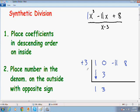So what we want to do is we want to multiply this positive 3 with this 3. And we want to place it right below the negative 11. So positive 3 times positive 3 gives you positive 9.